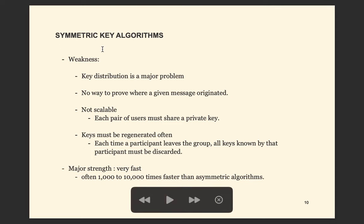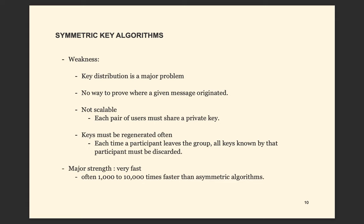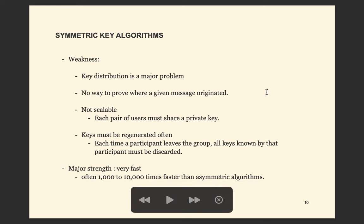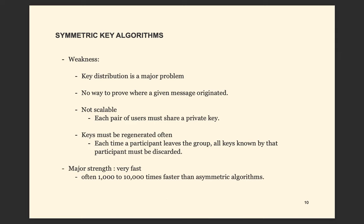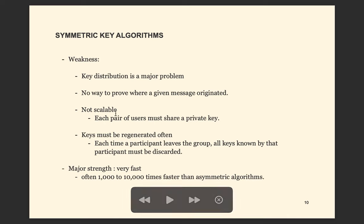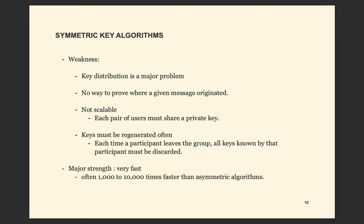Symmetric key algorithm has several weaknesses. First, key distribution is a major problem. Since everyone has to share the same key, how do we distribute the key to the parties involved? When you distribute the key, you may have to send it over the network and it can be intercepted. There is also no way to prove where a given message originated — we don't know who sent the message. And it's not scalable, because to keep conversation private for each pair of users, you need a unique key for each pair.